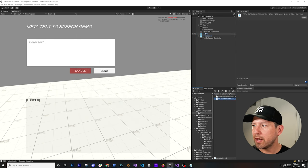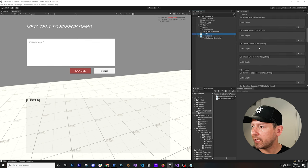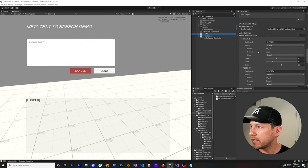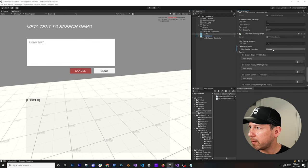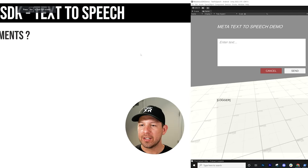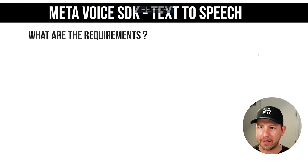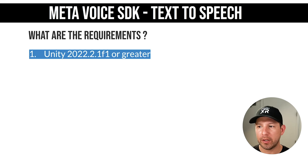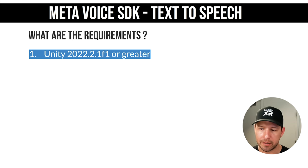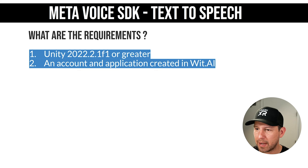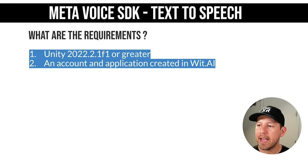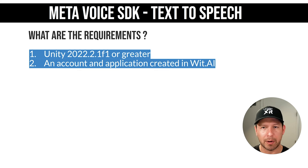Going down to the TTS Wit, you can change settings — all the way to every button you can see this is a Streaming option, and you can also set it to Preload. What are some of the requirements to make this demo work? I'm using Unity 2022 version 2 that one f1 or greater — they probably support earlier versions but this is what I'm showing today. You also have to create an account and application with Wit AI, which I covered in a linked video.